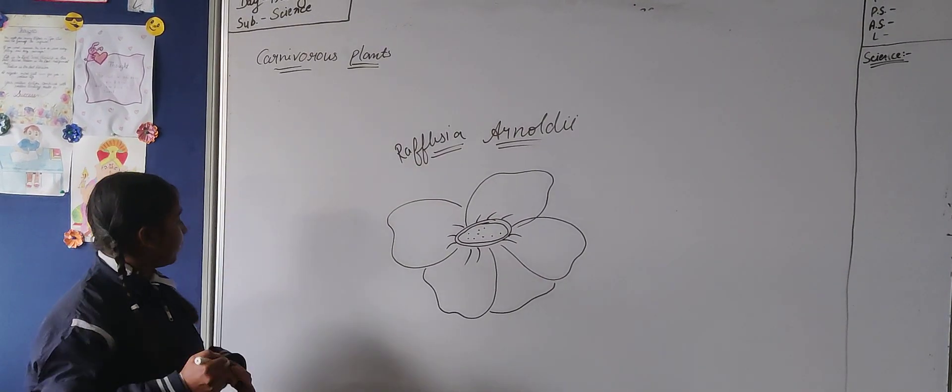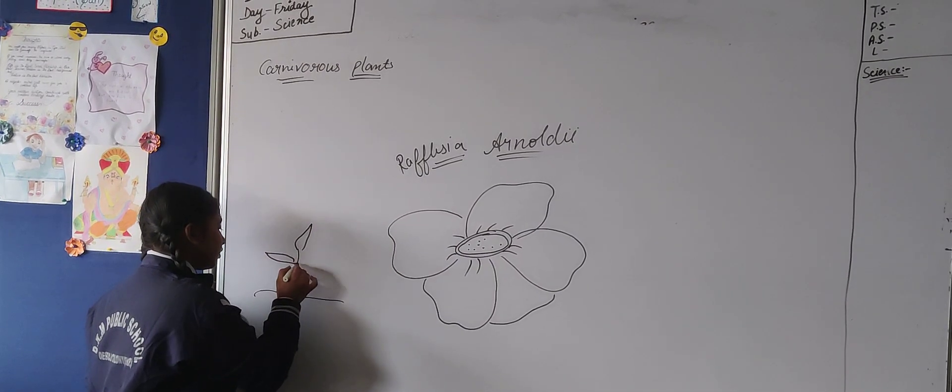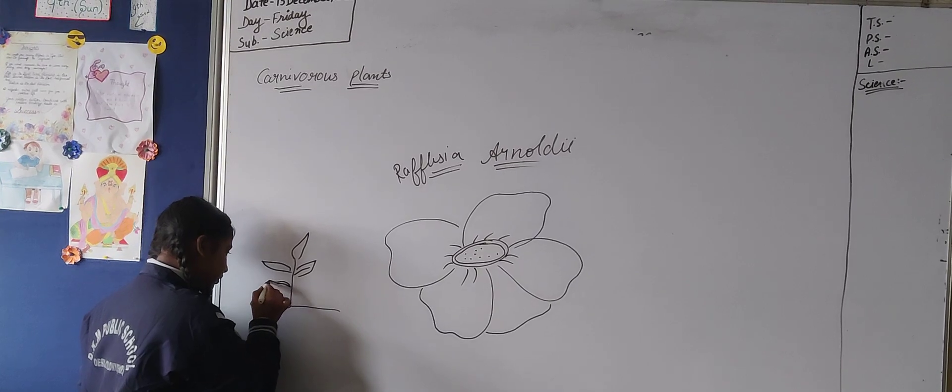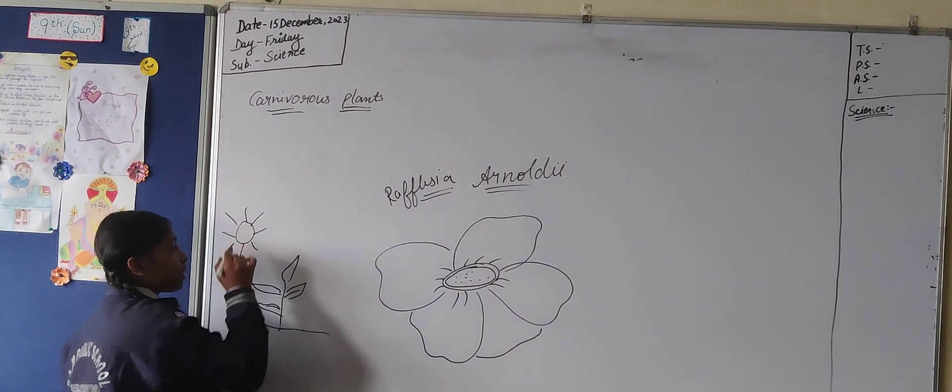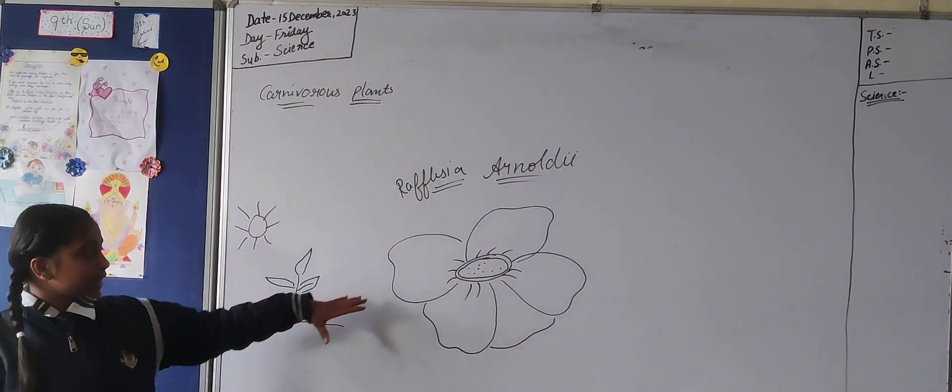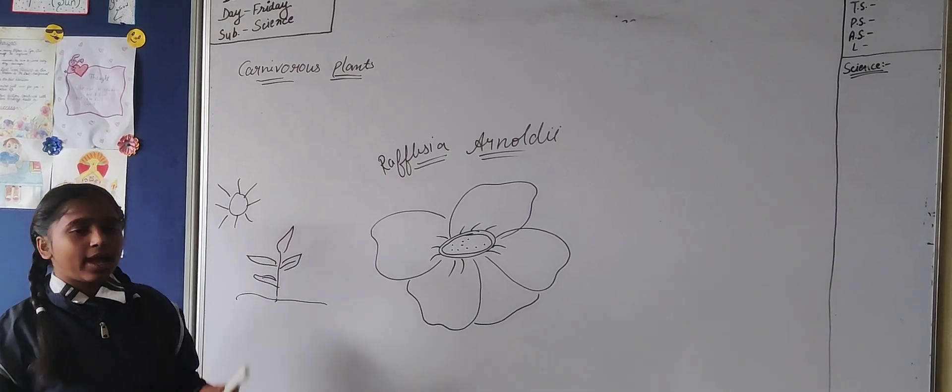Those plants which can prepare their own food with the help of sunlight, chlorophyll and water, those plants are considered as autotrophic plants. But plants like Rafflesia cannot prepare their own food because they grow in